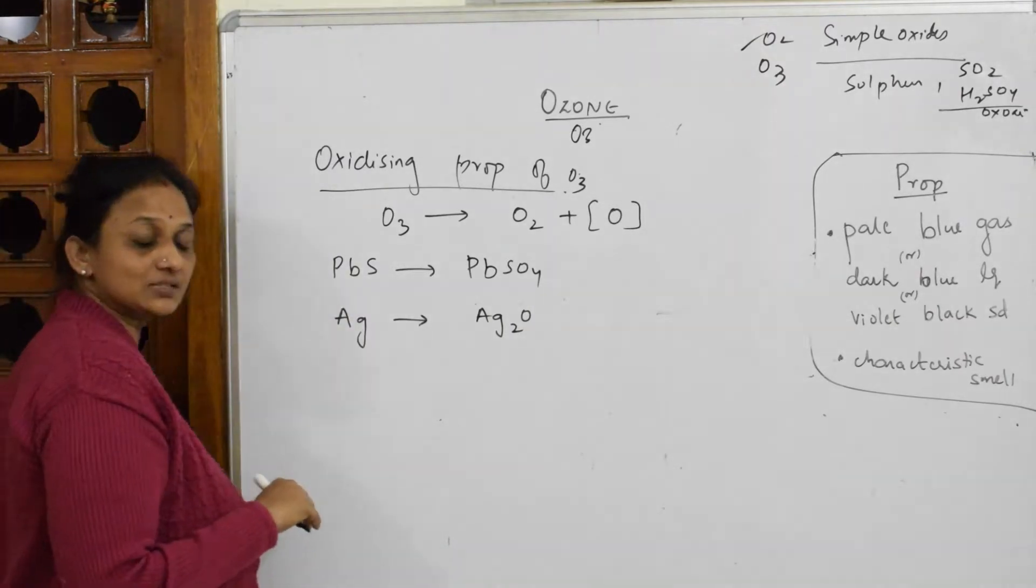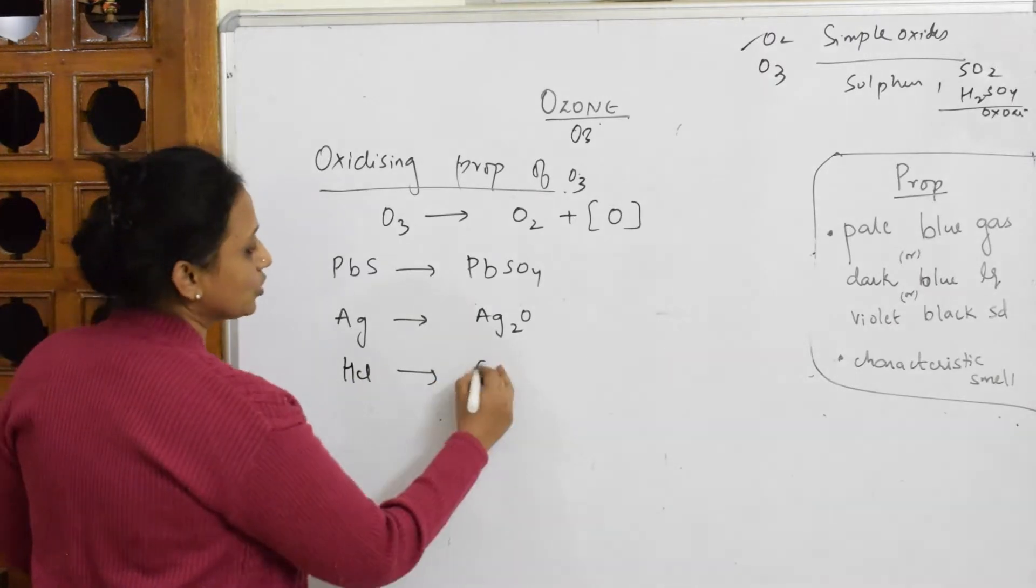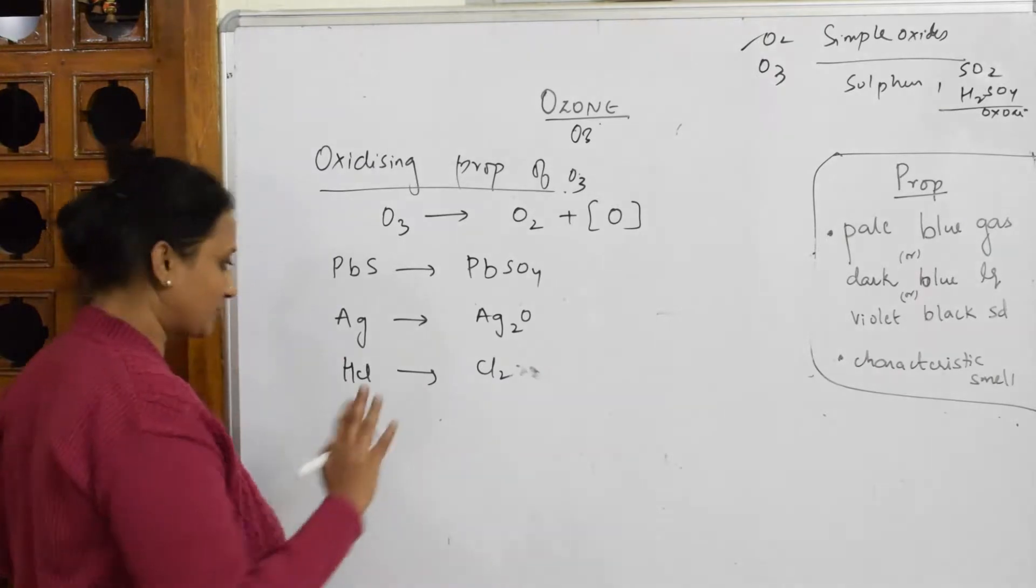Now it also going act as an oxidizing agent. It will convert HCl to chlorine gas. Chloride to chlorine zero valence done.